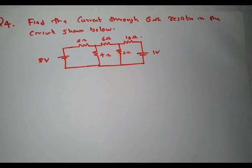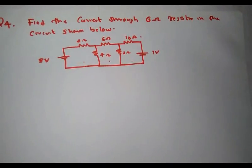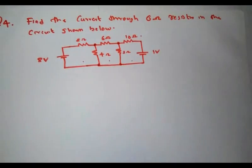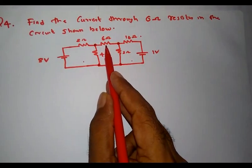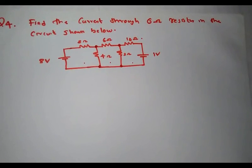I am given a circuit consisting of three different closed loops or meshes. This is the first mesh, this is the second mesh, and this is the third mesh. The circuit also consists of different nodes. The question is to find the current through the 6 ohm resistor. We can either determine the mesh currents i1, i2, i3 and solve, or simply solve the circuit using nodal analysis.